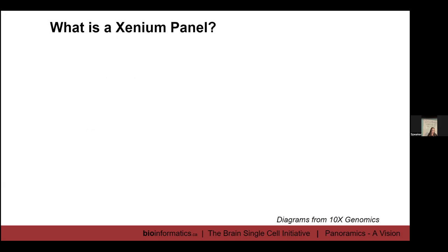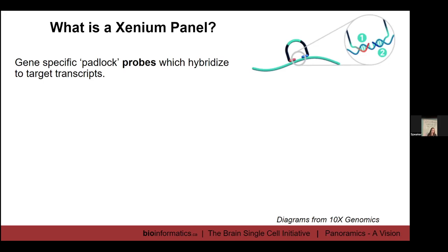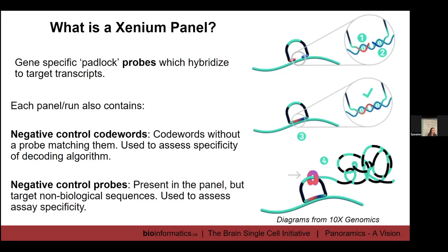So what is a Xenium panel? We have these gene-specific padlock probes which hybridize to our target transcripts. We have two arms which bond down, and any unstable probes will be washed away — if the two arms aren't bound, the probe won't be there after the post-hybridization wash. The arms are then ligated, followed by rolling circle amplification. The panel also contains negative control codewords — codewords without a matching probe — to assess the specificity of the decoding algorithm, and negative control probes that target non-biological sequences to assess assay specificity.